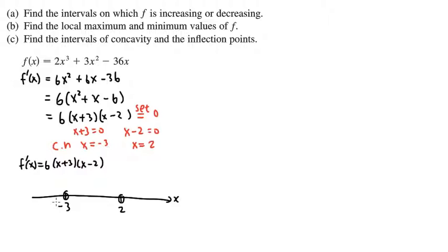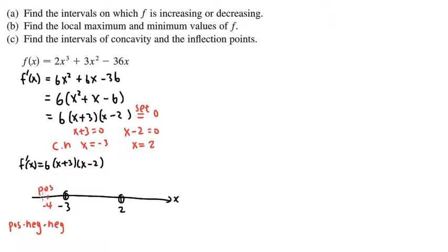We pick a number less than negative 3, so let's say negative 4, and plug it into the first derivative. We see that we have 6 in the front, so that's positive. Plugging negative 4 into x plus 3 gives negative 1, which is negative. Plugging negative 4 into x minus 2 gives negative 6, which is also negative. Positive times negative times negative altogether is positive. So we know that on the interval from negative infinity to negative 3, the first derivative is positive.